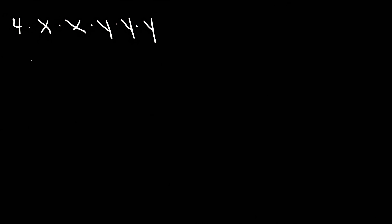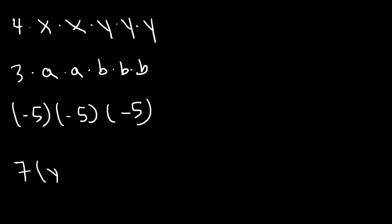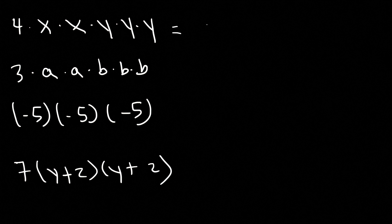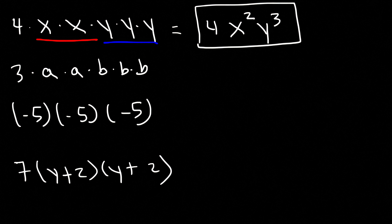Consider these four examples — go ahead and write them another way using exponents. Feel free to pause the video as I write these problems on the board. Let's start with the first one. We have a single 4, which you can say is 4 to the 1st power, or just leave it as 4. Then we have two x variables multiplied together, so x times x is simply x squared. There are three y variables, so we write it as y cubed. This single term is called a monomial, and the answer is 4x squared y cubed.